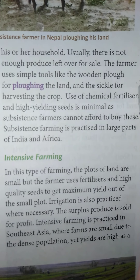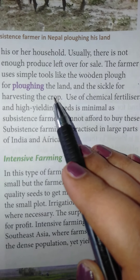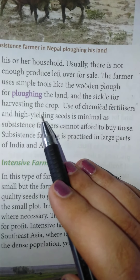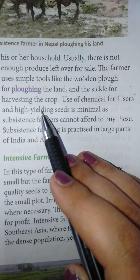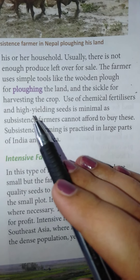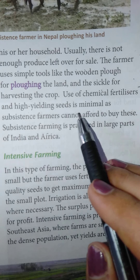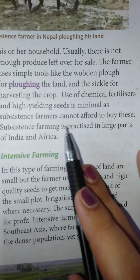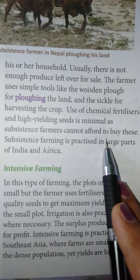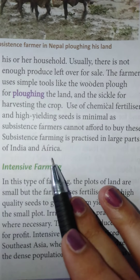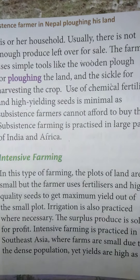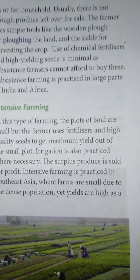The farmer uses simple tools such as hoes to feed the land, wooden ploughs for ploughing the land, and sickles for harvesting and cutting the crops. They use ancient tools. Their use of chemical fertilizers and high-yielding seeds is minimal because they cannot afford them. This type of farming is practiced in large parts of India and Africa, where people only grow crops for their family.